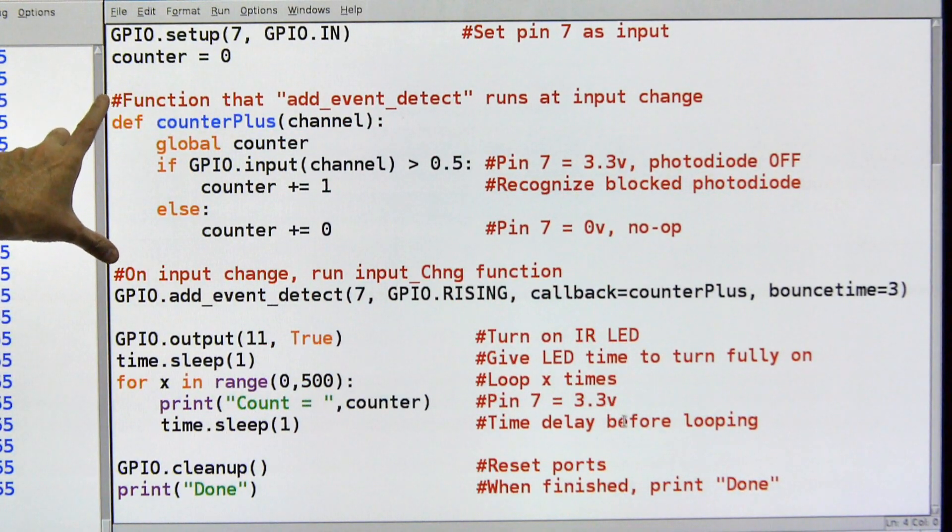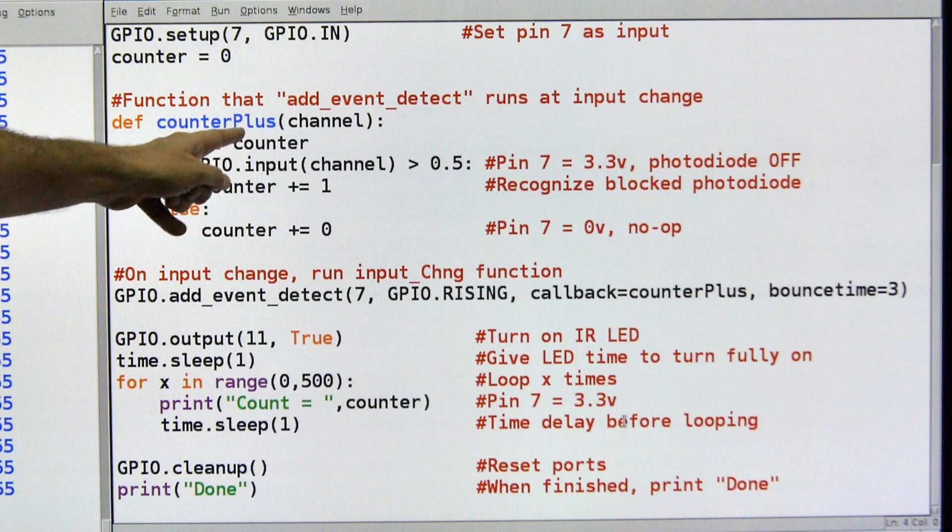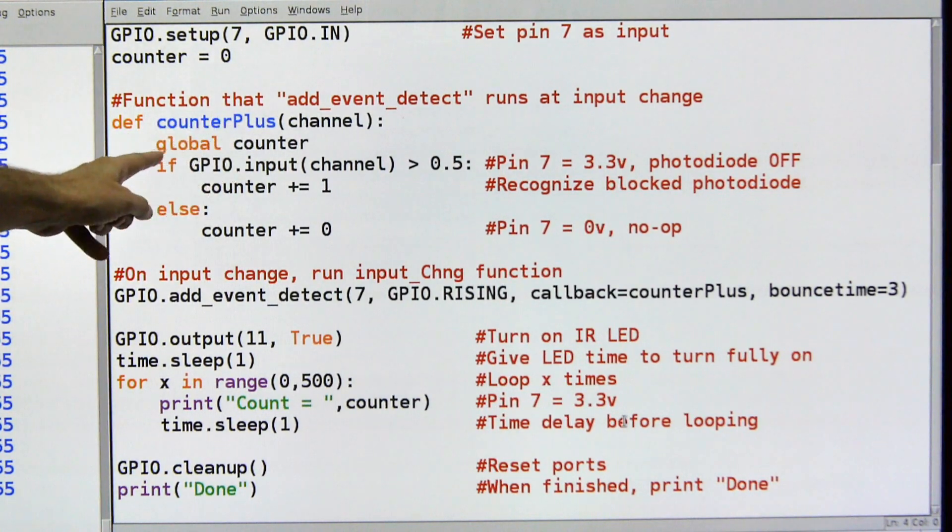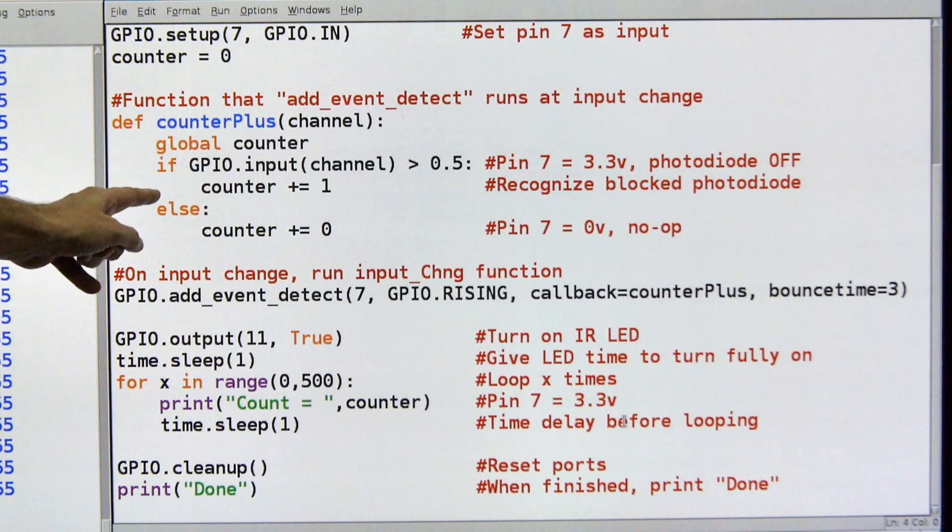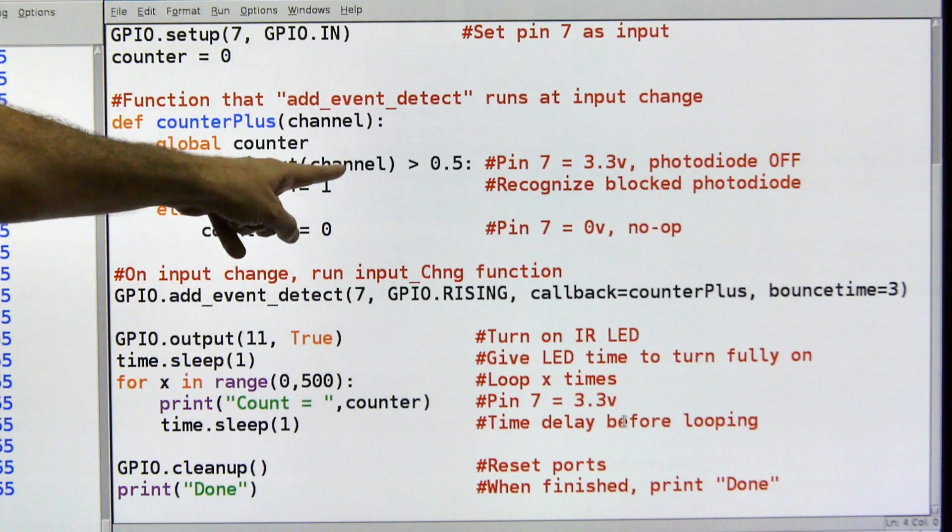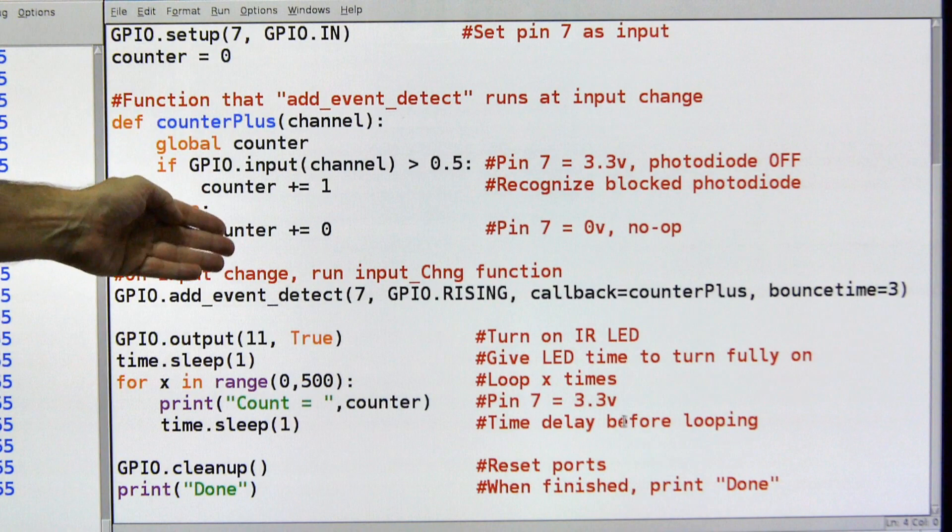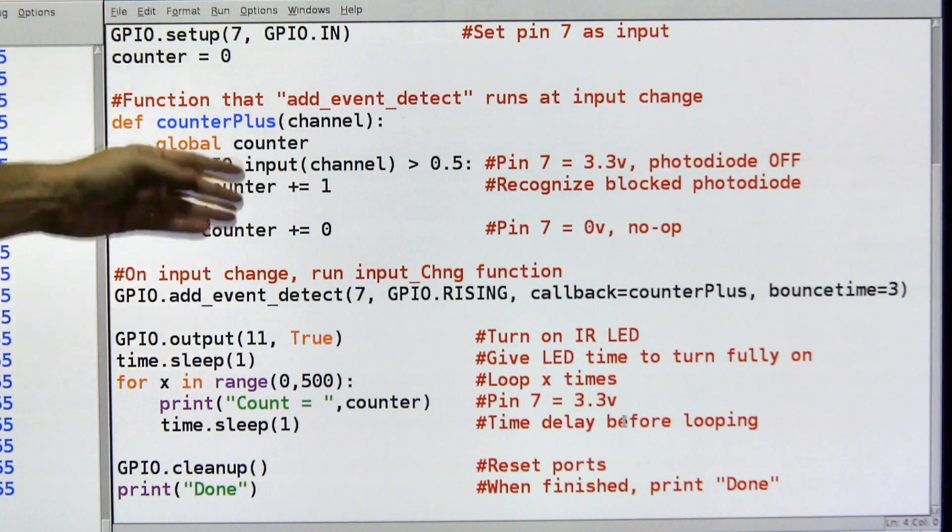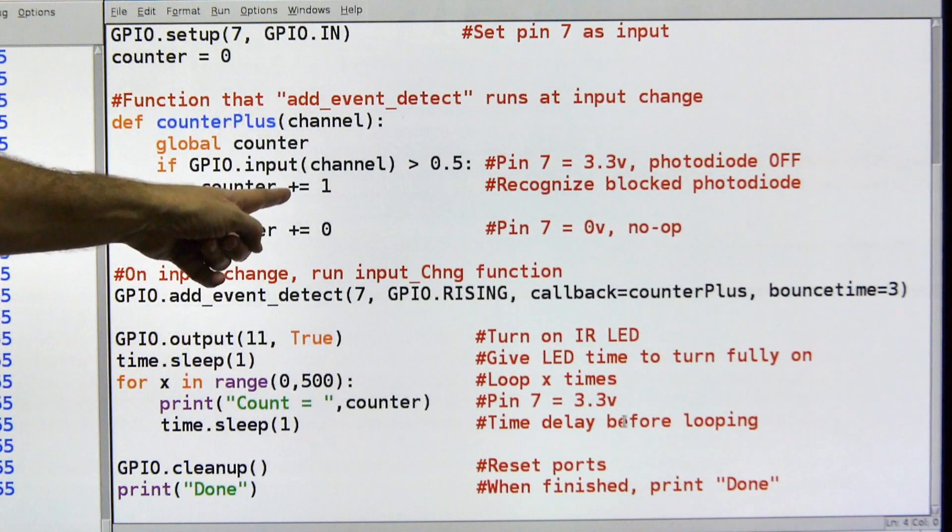This little bit right here is the function that's going to detect. It's going to upgrade the counter, update the counter whenever an interrupt is detected, and its name is counter plus, and then the channel, which is pin seven. I'm going to globalize counter, and please don't scream. I know you're not supposed to use global, but it works very well, especially with interrupts and functions. If GPIO input channel, which is seven is greater than 0.5, it means the photodiode has been blocked, and I need to count that, so I'm going to increment my counter by one.